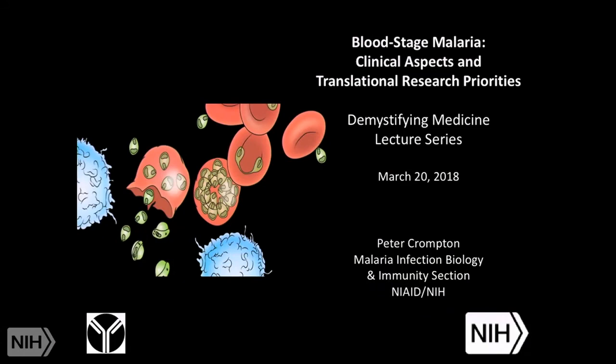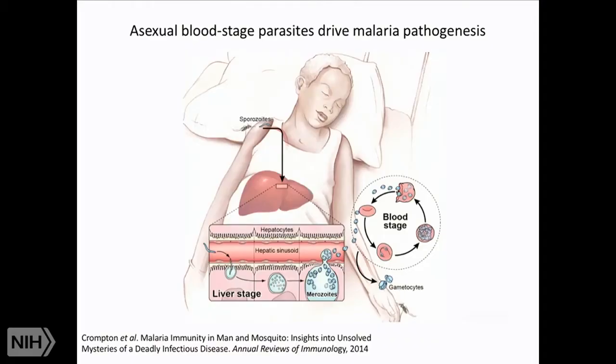Thank you for the kind introduction and for the invitation to participate in this wonderful lecture series. Thanks to all of you for braving the terrible weather and for the great questions. My friend and colleague Dr. Fotini-Sinnis is a tough act to follow, but I will pick up on the plasmodium falciparum life cycle where she left off and focus on the asexual blood stage. As you recall, Fotini described the skin and liver stages that initiate human infection, as well as the sexual blood stage gametocytes that are transmitted from the human back to the mosquito. It's the asexual blood stage parasites that drive the pathogenesis and cause the disease we know as malaria.